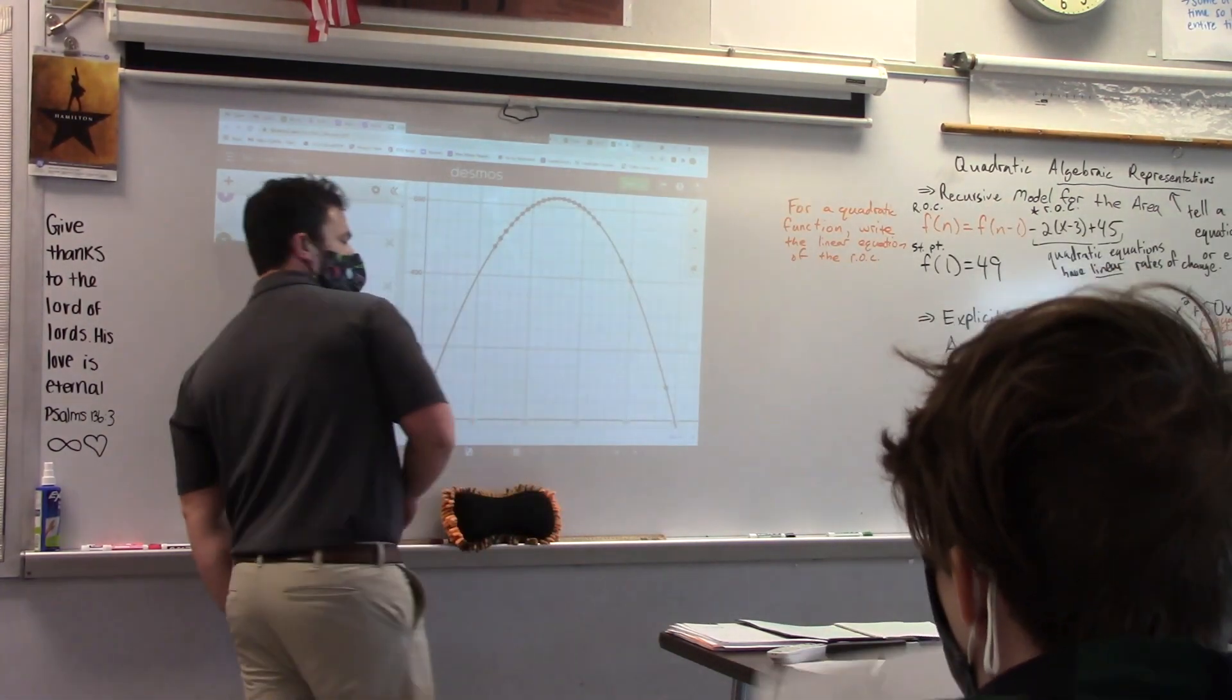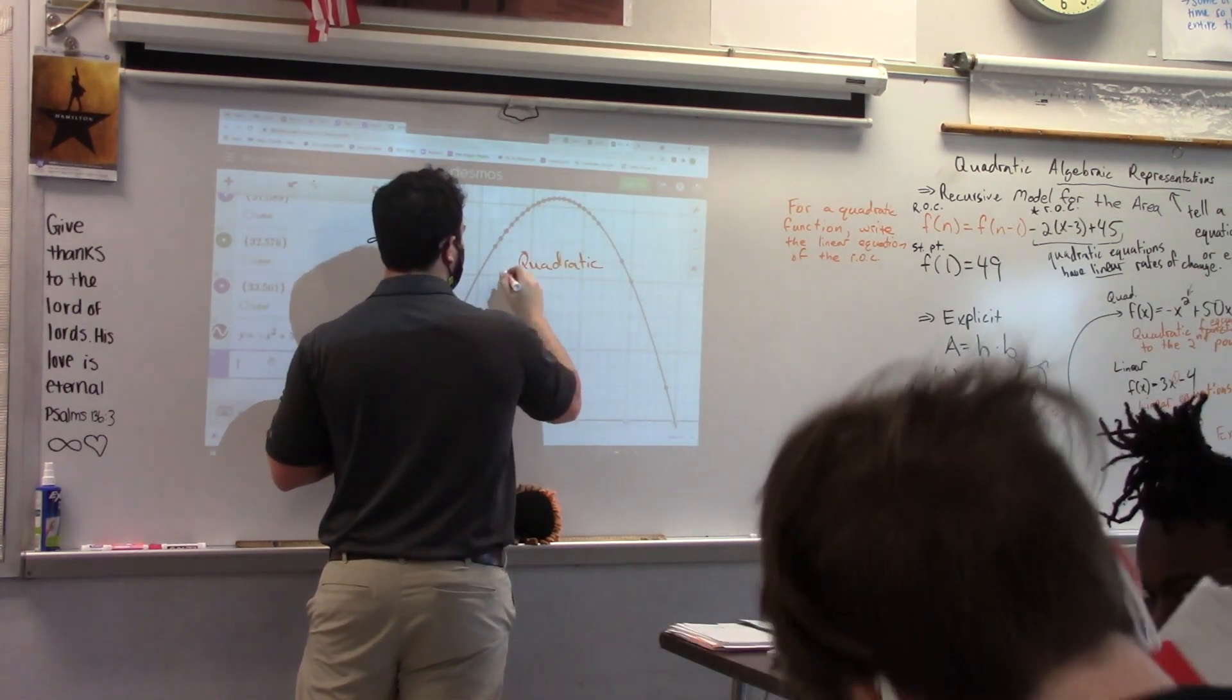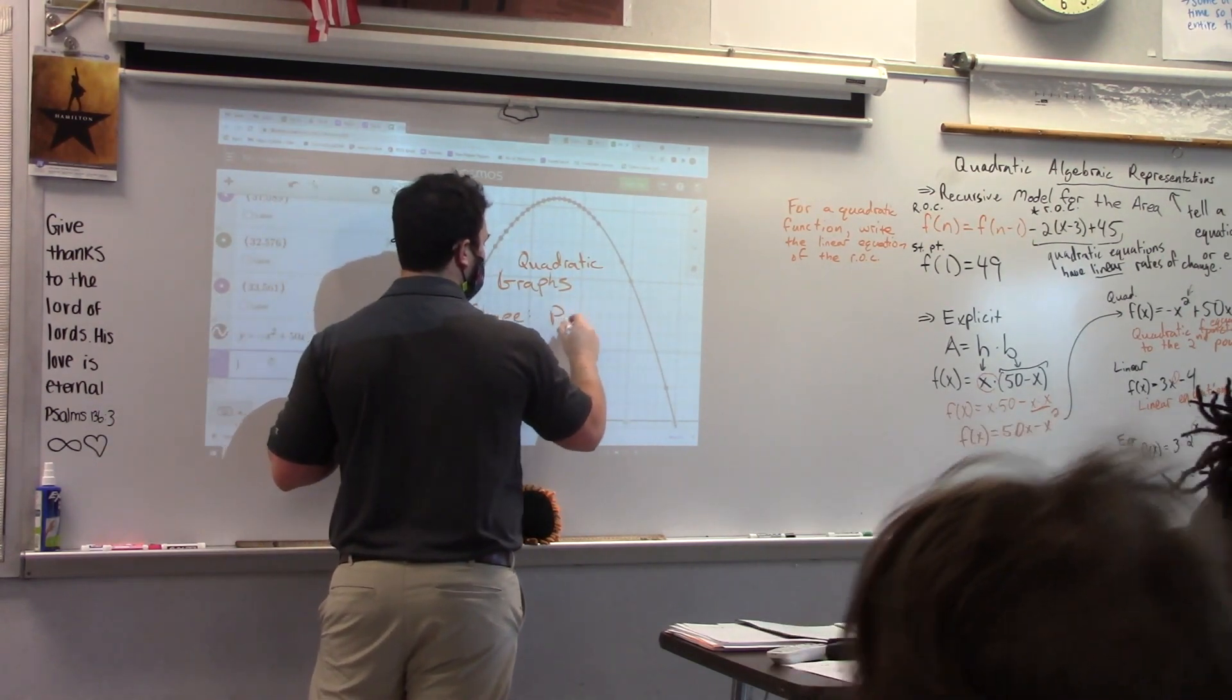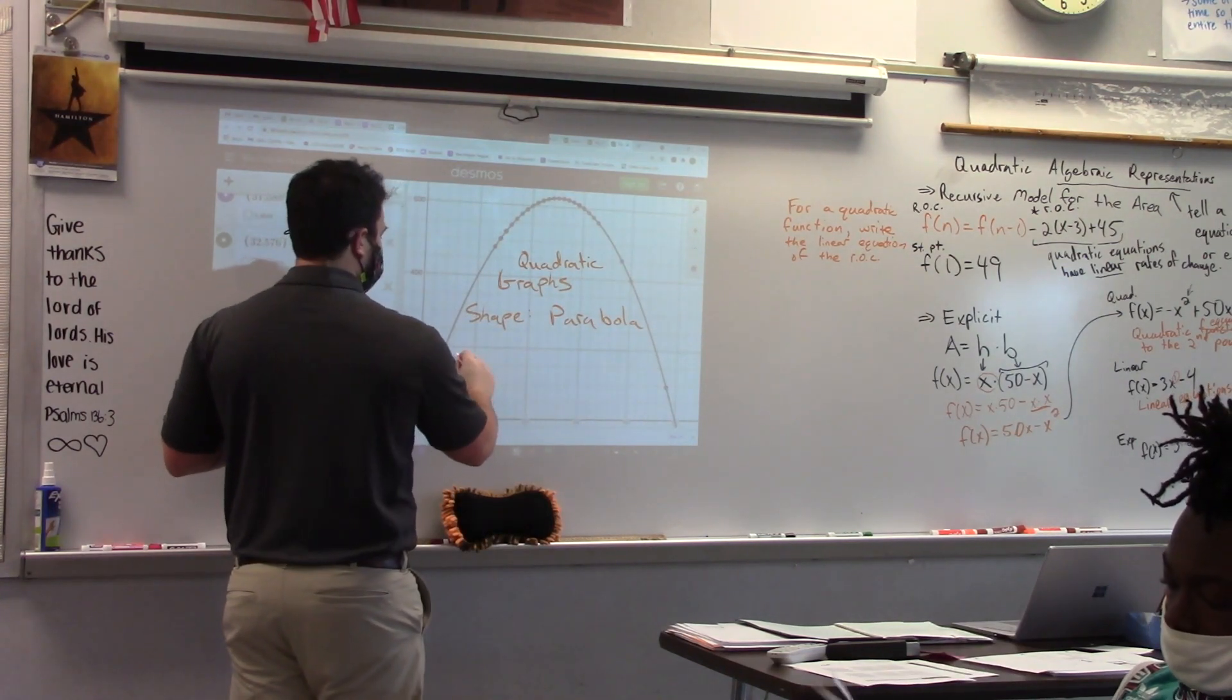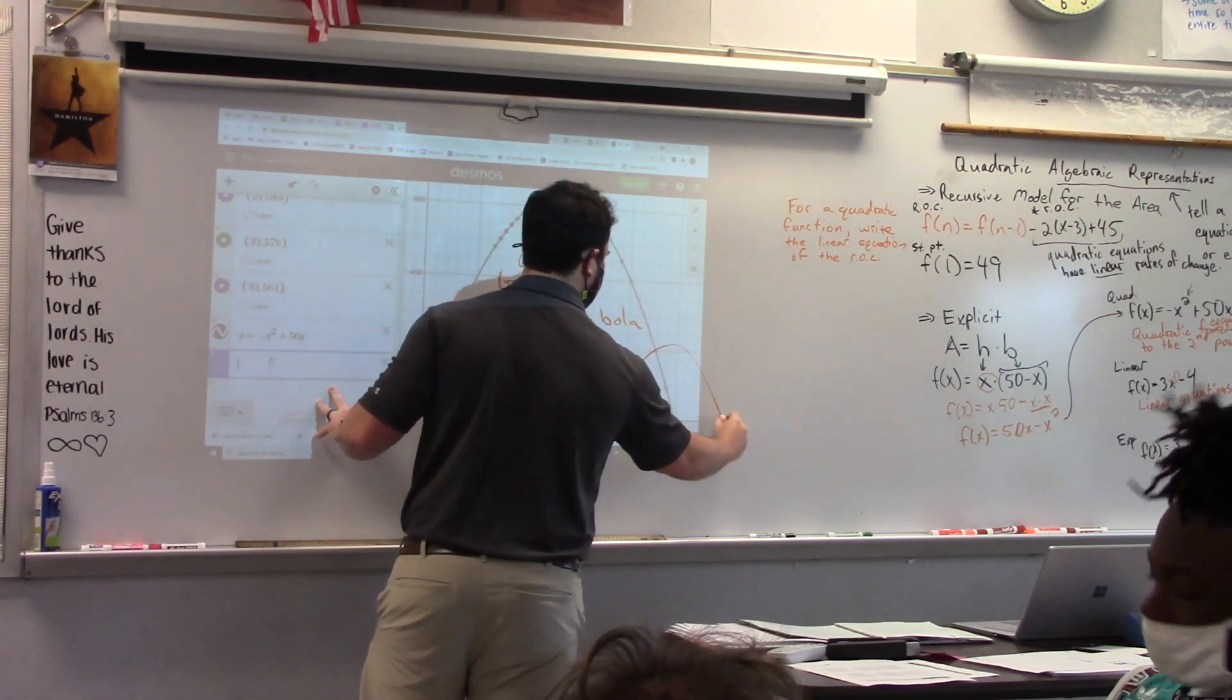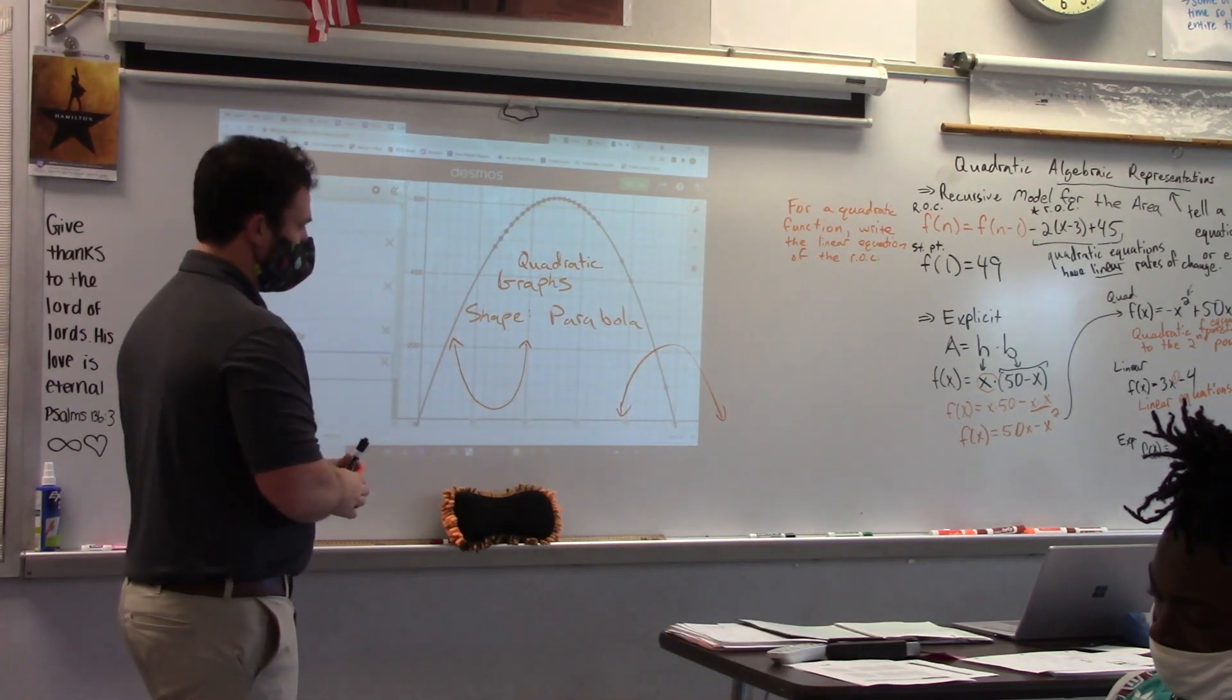Here's the notes you need to take on quadratic graphs. It does not take long. Quadratic graphs - the shape, whenever you see this graph shape, it is a parabola. And there's two ways that it can look, and you need both of these written down. The shape of a quadratic function is called a parabola.